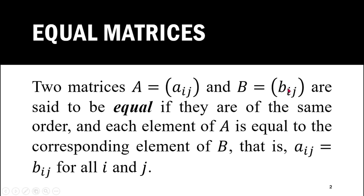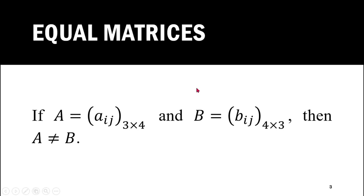Similarly, i represents the row number of matrix B in which element b_ij lies, and j represents the column number of matrix B in which b_ij lies. So, whenever the orders of A and B are the same and the corresponding elements of A and B are also the same, we can say that A and B are equal.